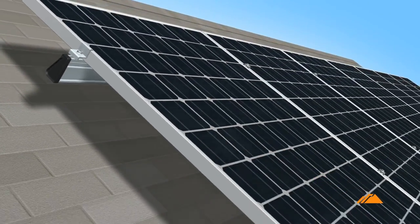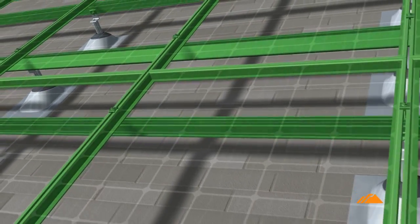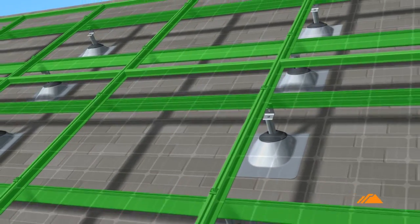Once installed, the Iron Ridge Integrated Grounding System provides complete structural and electrical security for the lifetime of the solar array.